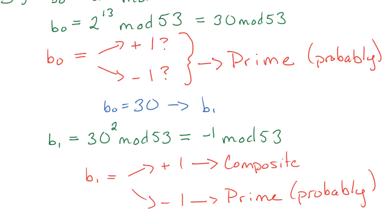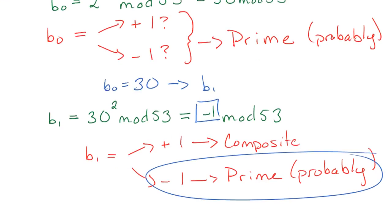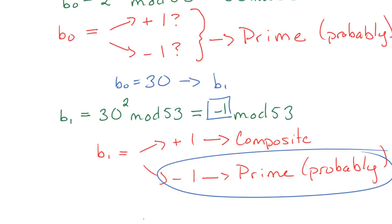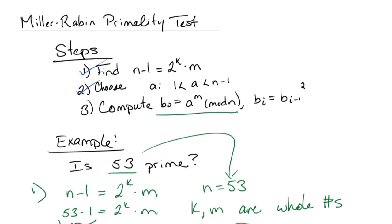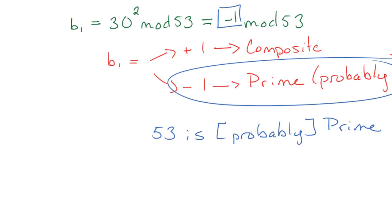What did we have? We had negative 1. So our case was this. Negative 1 implies it's prime. Therefore, the conclusion of this problem is 53 is probably prime. And we have finished the problem.